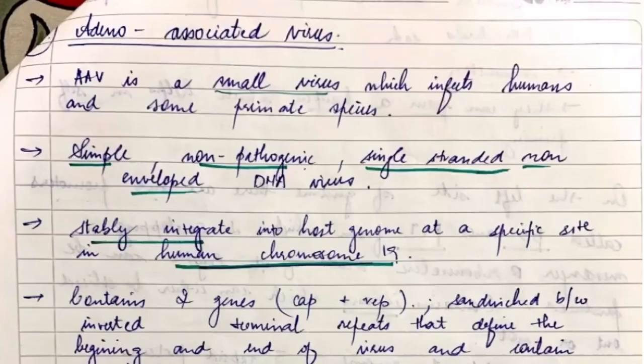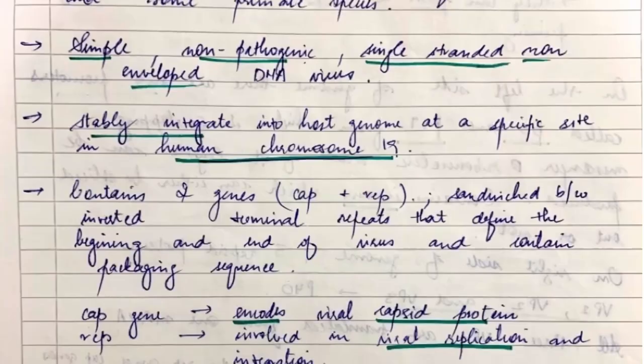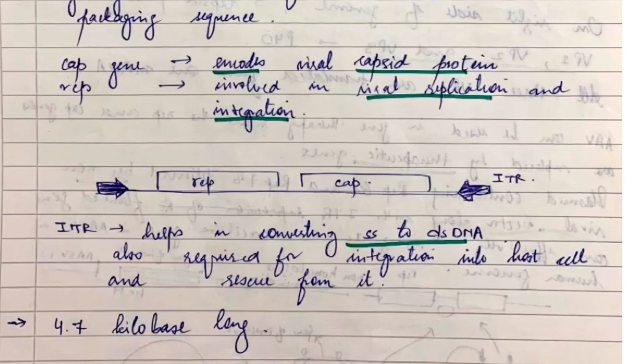Now let's study about the next virus, that is adeno-associated virus, that is AAV virus. It is a small virus which infects humans and is a single-stranded, non-enveloped DNA virus. It can stably integrate into host genome at chromosome number 19.